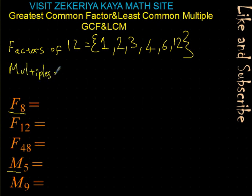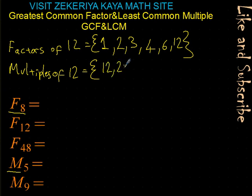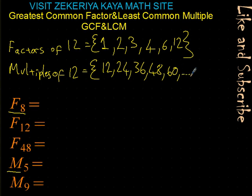Now, multiples of a number. Multiples of 12 are the numbers you get by multiplying 12 by a natural number. For example: 12 times 1 is 12, 12 times 2 is 24, 12 times 3 is 36, 12 times 4 is 48, 12 times 5 is 60. If you multiply 12 by any natural number, the result is a multiple of 12.